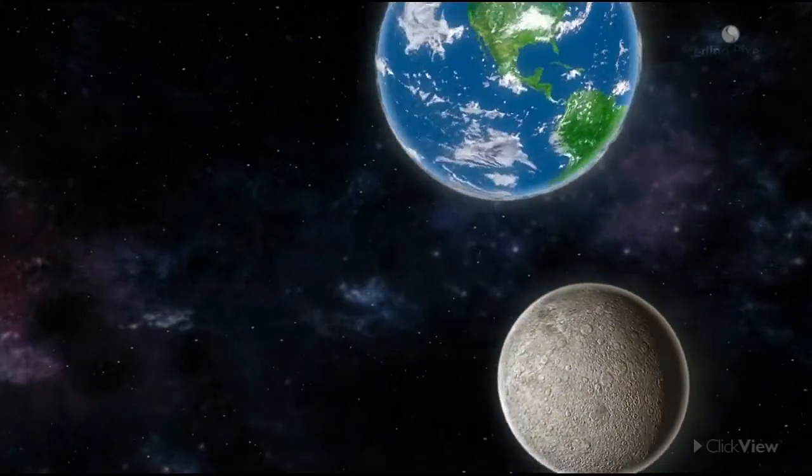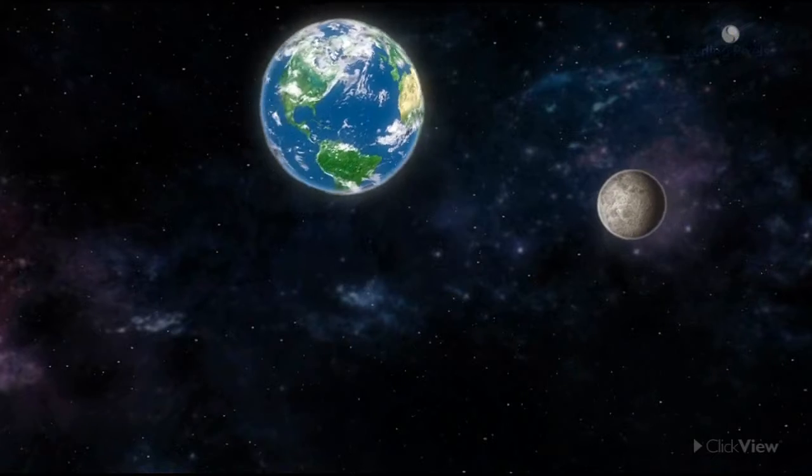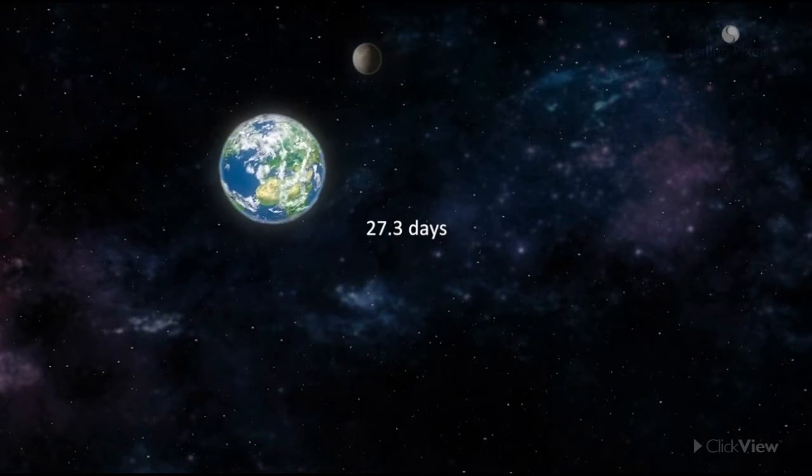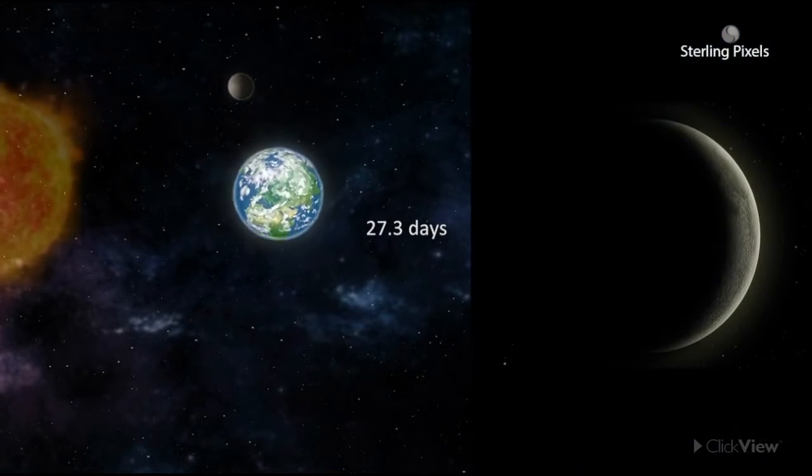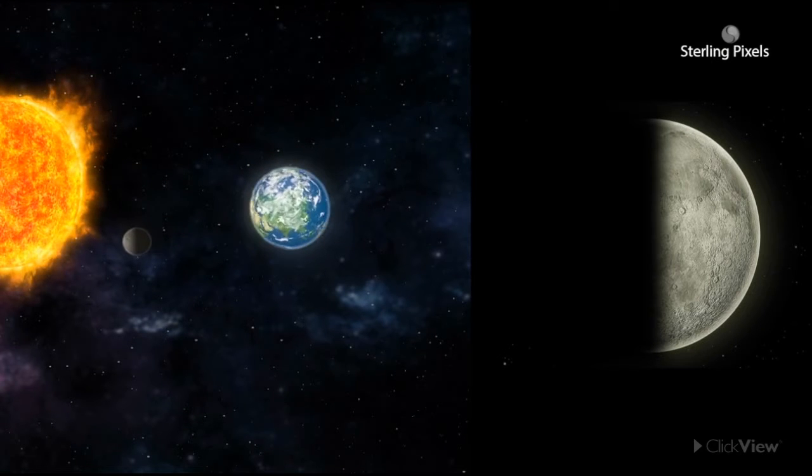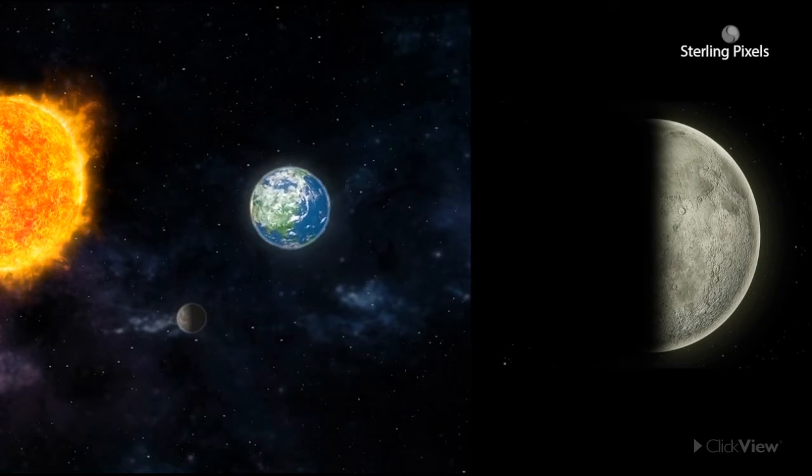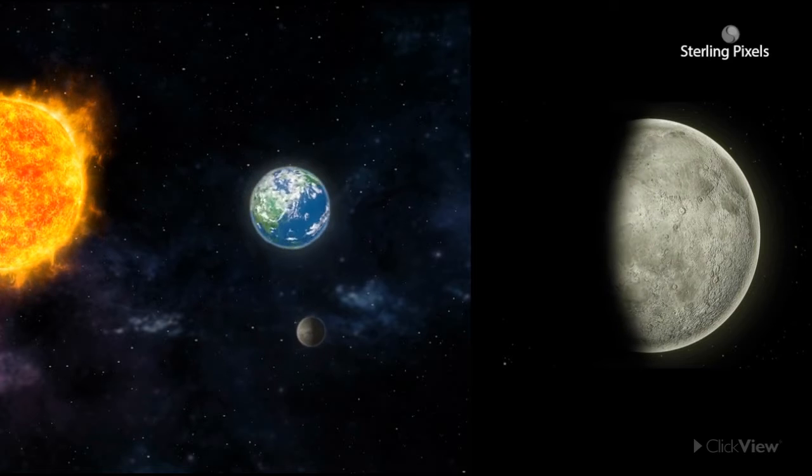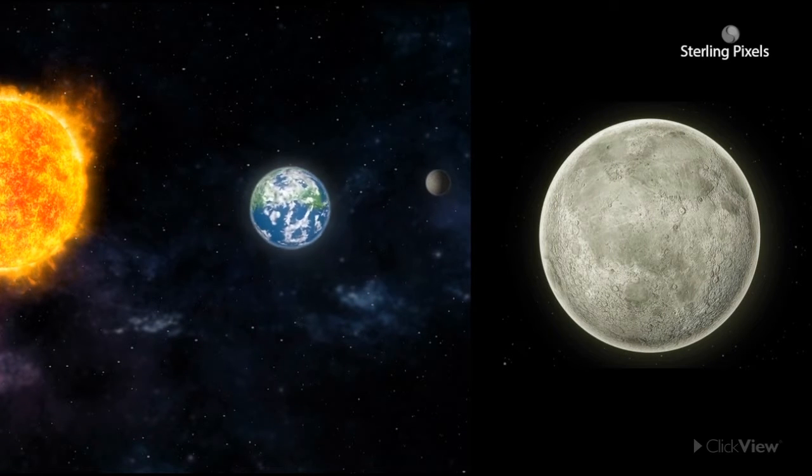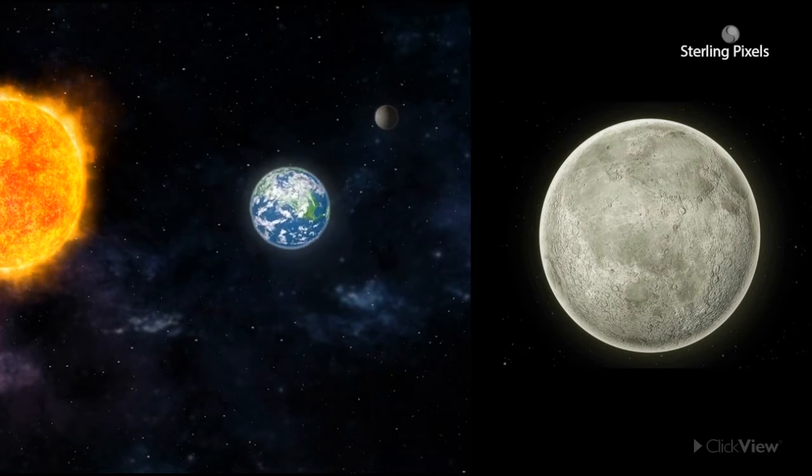It is the Earth's natural satellite, which revolves around the Earth in 27.3 days and rotates once on its axis in the same period of time. Its revolution and rotation are such that only one side of the moon faces the Earth.